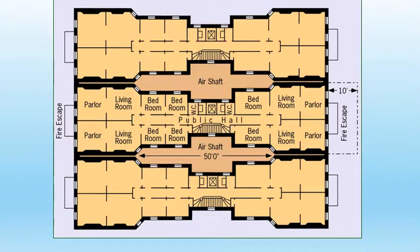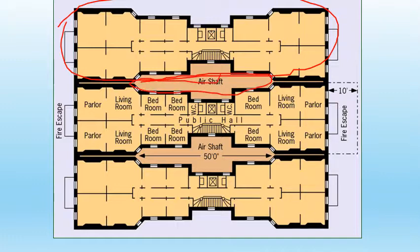This is what a tenement looked like — basically an apartment building. These were called 'dumbbell tenements' because of their shape. The idea was that an air shaft in the middle would allow air to circulate and keep things clean, but it didn't work. Air could never really get into the shaft areas, and sunlight could only reach the bottom at noon. So the whole shaft idea did not work out as people thought.